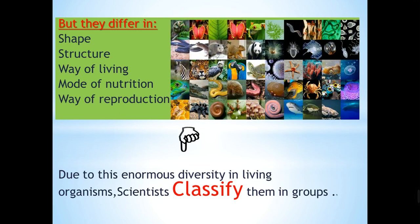But living organisms may differ in their shape, their structure, and their way of living — some live on land, some live in the sea, and so on. They also differ in mode of nutrition: some are autotrophic, depending on themselves to make food through photosynthesis, while others are heterotrophic, depending on other living organisms for food. Living organisms may also differ in reproduction: some have sexual reproduction involving mating between male and female, and others reproduce by asexual reproduction.